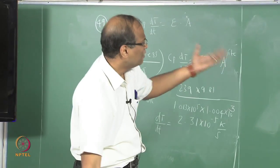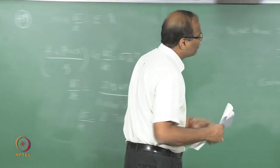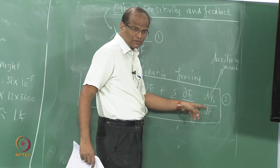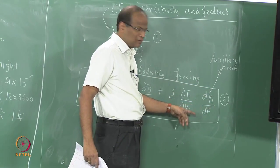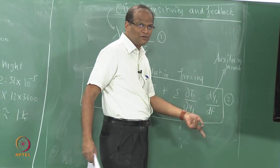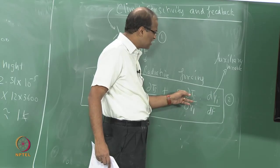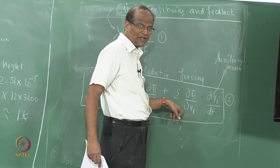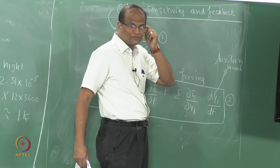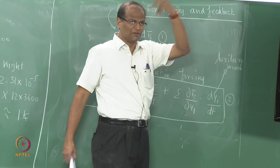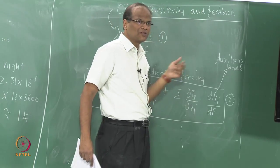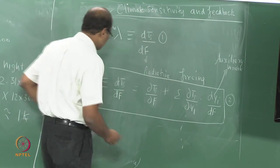Now, in the absence of any feedback — they are all feedbacks. If the concentration of water vapor changes, dY/dF will be nonzero. Then you multiply by the rate of change of temperature with respect to y_i. Some feedbacks have a cross-correlation between variables — more water vapor leads to further warming.